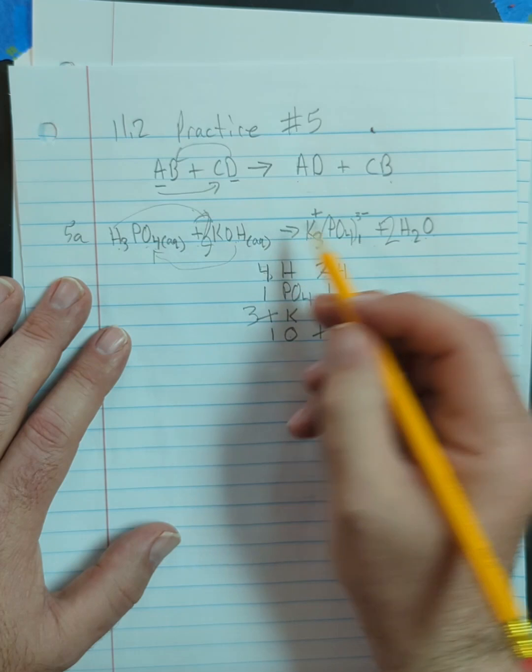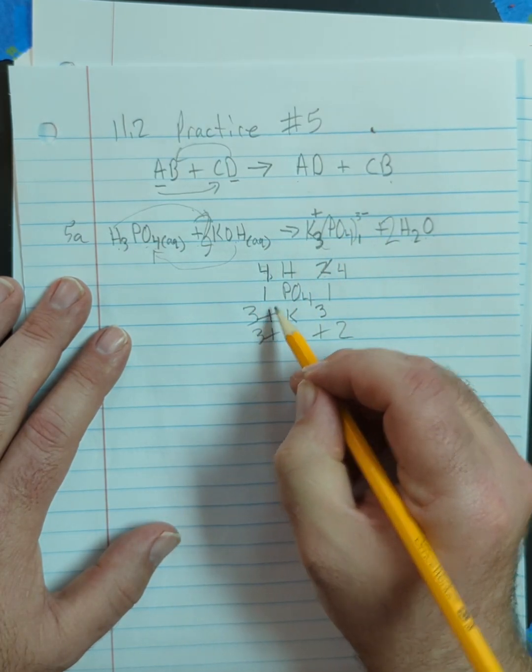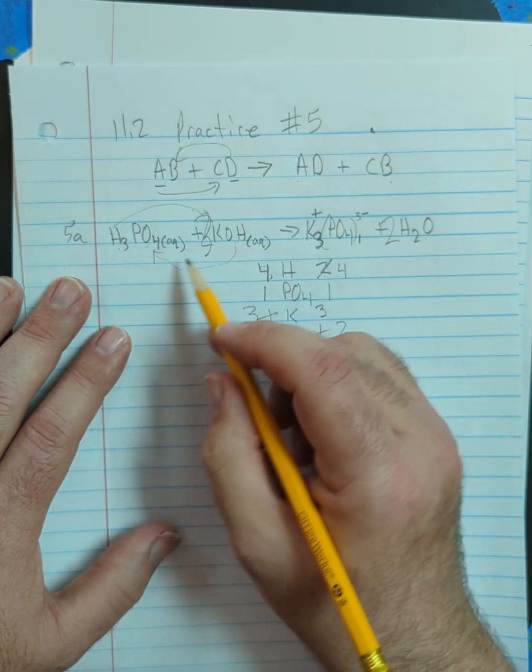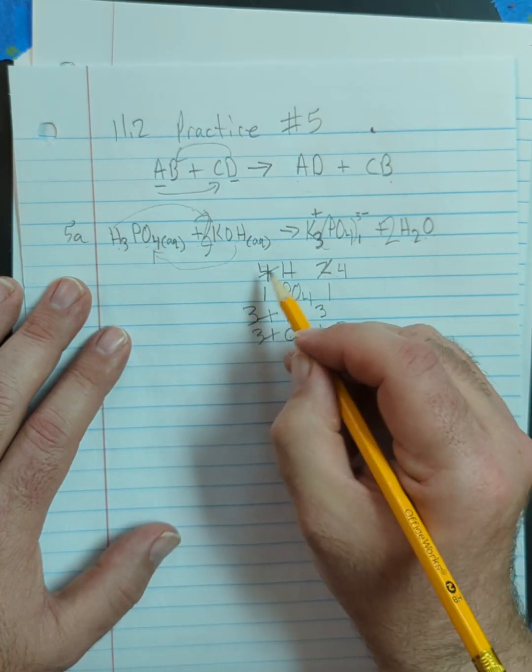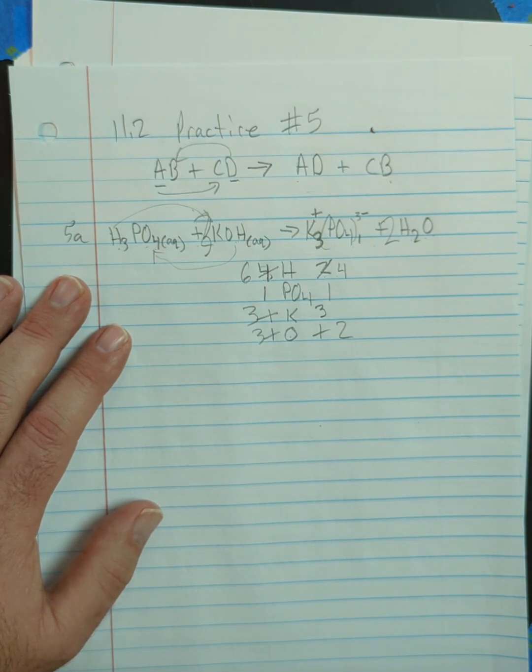So that's going to give me three potassiums, three O's, and three H's. So that would be a total of six hydrogens. All right. Well, that didn't work, so we keep going.